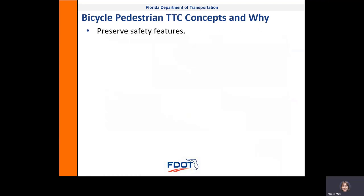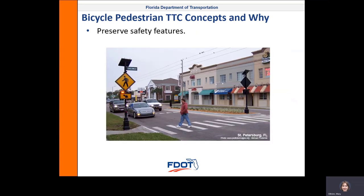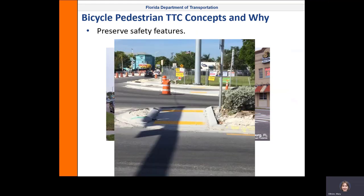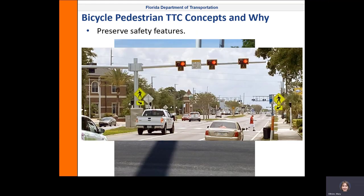The next general concept is to preserve safety features. For example, rectangular rapid flashing beacons or leading pedestrian intervals, sometimes known as LPIs. A leading pedestrian interval means that a pedestrian will get the walk signal a couple of seconds before the cars running parallel will get the green light, so that they get a head start at traffic lights. Other safety features are lighting at crosswalks, bulb outs, refuge islands, and pedestrian hybrid beacons.